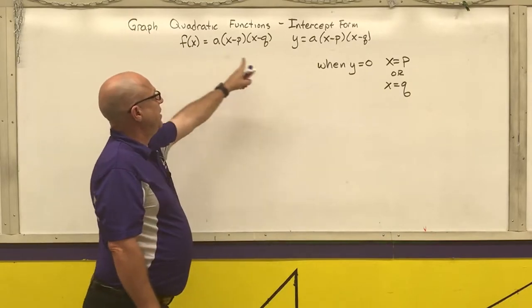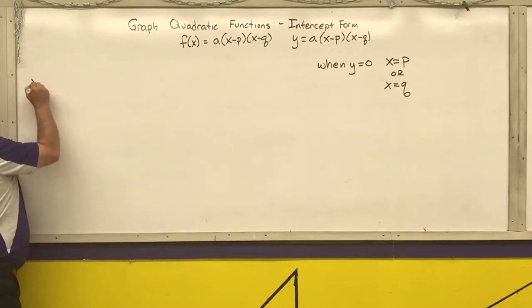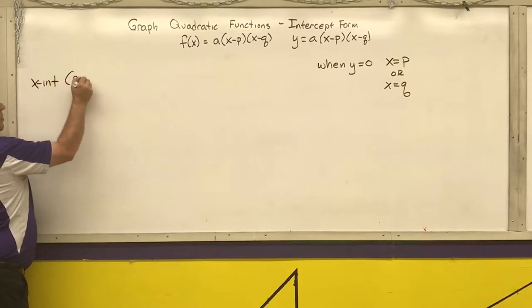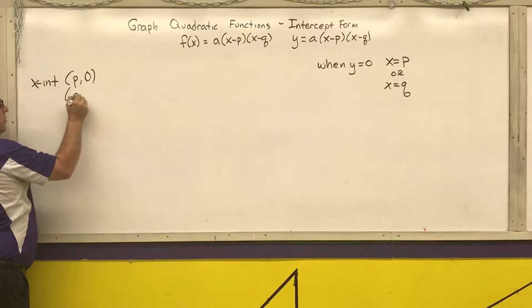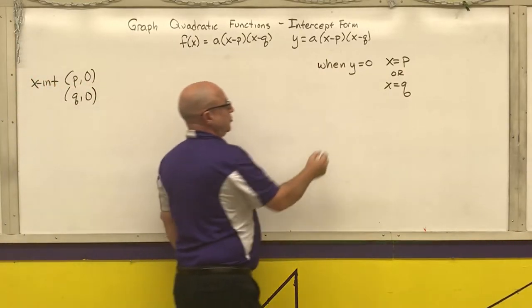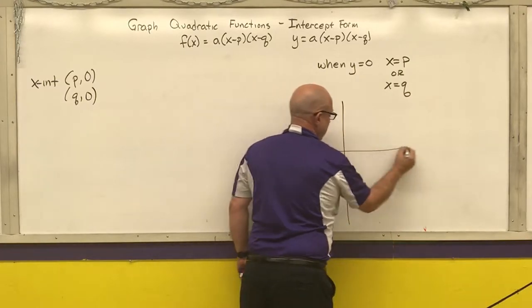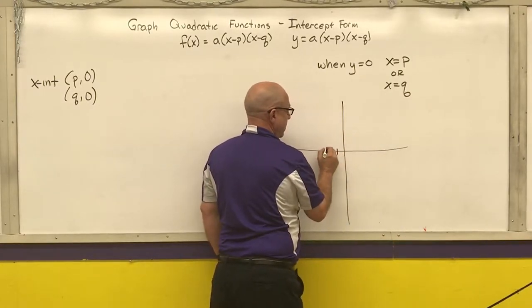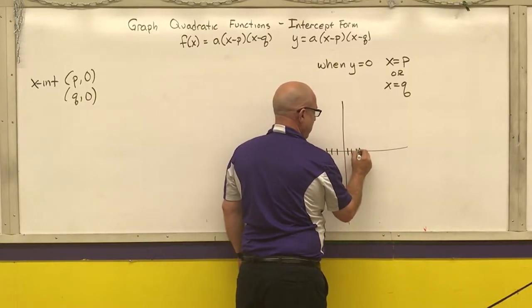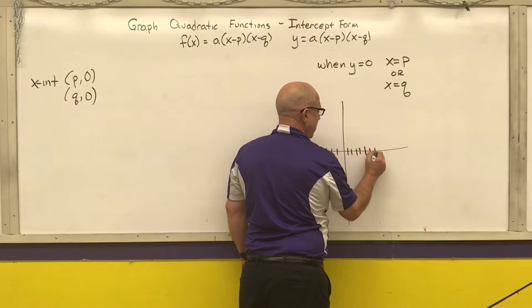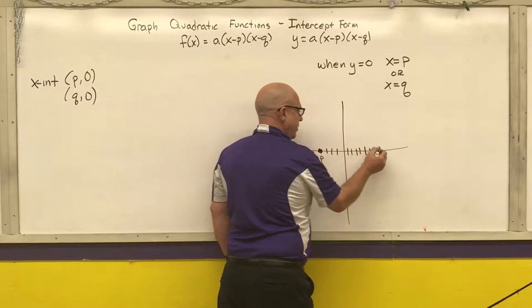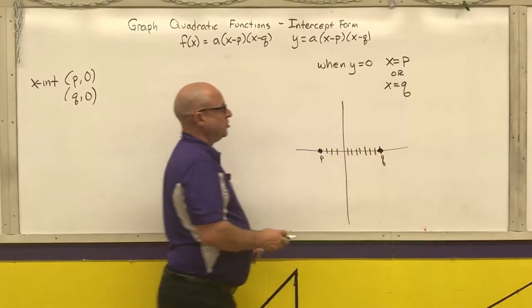So if I am in intercept form, my x-intercepts are at p comma zero and at q comma zero. So I'm just going to draw a generic graph. We're going to call this point p. I'll call this point q. Those are my intercepts.